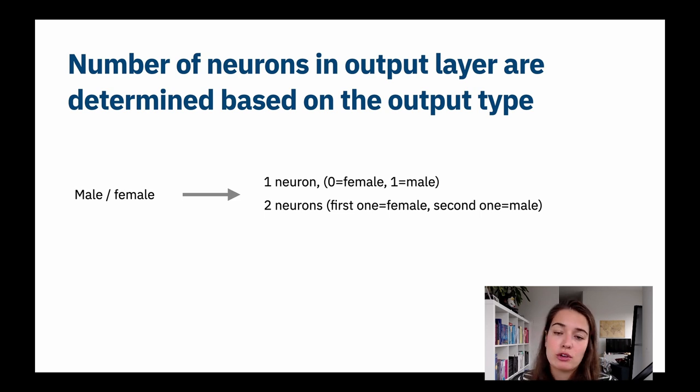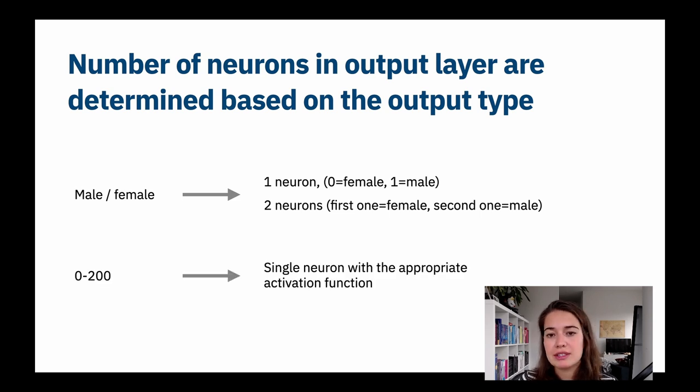Another example: let's say you're doing regression and the output is from zero to 200, or even zero to one. Then you're going to have one output neuron, and that neuron is going to get different activation functions or maybe no activation function to give you the output you want. This completely depends on your data and what kind of output you're looking for.